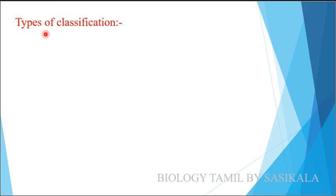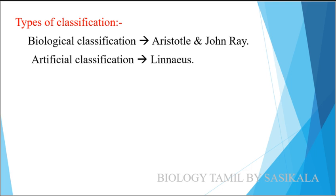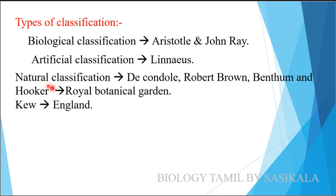There are types of classification. We know two scientists involved: Aristotle and John Ray. The first type is Artificial Classification, introduced by Linnaeus. The second type is Natural Classification, introduced by Decandolle, Robert Brown, and Bentham and Hooker, who worked at the Royal Botanical Gardens.